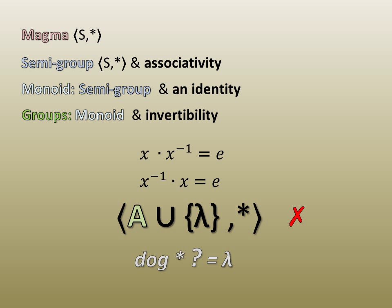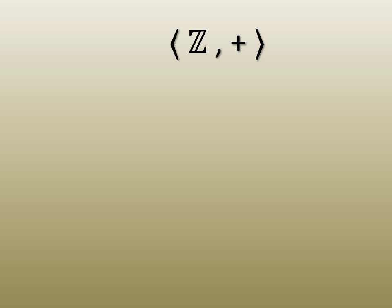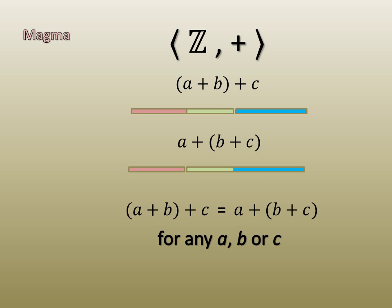For our first example, the study of positive integers under addition. Addition certainly qualifies as a closed binary operation, so we have a magma. Addition, as shown here geometrically, is also associative, so we have a semi-group.